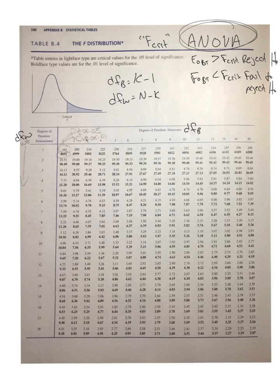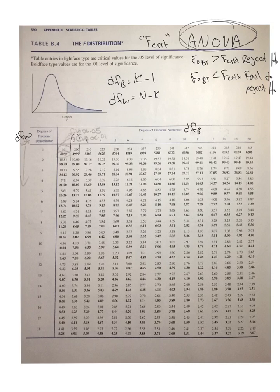Let's find our critical value of F. Say we have three groups of three. My degrees of freedom between would be K minus one — number of groups minus one — so three minus one is two. That means it's going to be in this column on the table. My degrees of freedom within is capital N minus K: nine (three times three) minus three groups, so nine minus three is six.